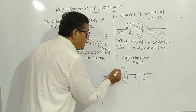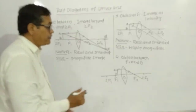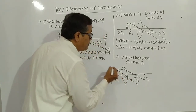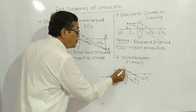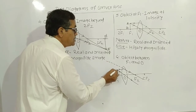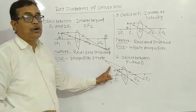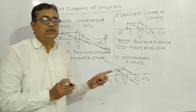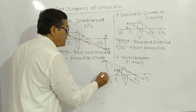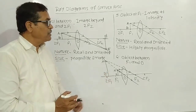Rule one: light ray parallel to the principal axis — refracted ray passes from focus. Rule three: light ray passes from optical center, passing undeviated. Imagine that both light rays appear to come from a single point on the same side as the object — that is the position of the image. We indicate it with a dotted line because it is not a real image; it is a virtual image, above the principal axis.